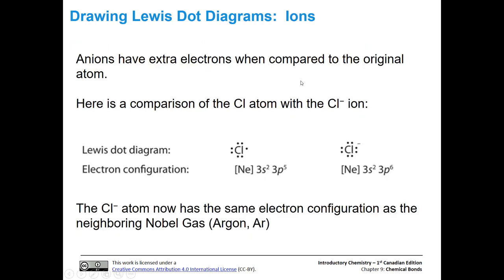When compared to the original atom, anions have an extra electron. Looking at a chlorine atom versus a chloride anion: a chlorine atom has seven valence electrons, shown in the electron configuration as [Ne] plus the valence electrons. If we add one more electron, we get a chloride anion. The electron configuration for the core electrons is neon, and now we have eight electrons in the valence shell: 3s², 3p⁶ — one more than the chlorine atom. This electron configuration is actually like argon, as opposed to neon.